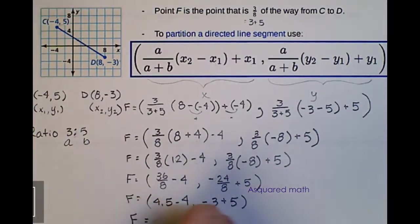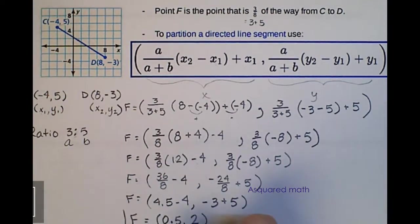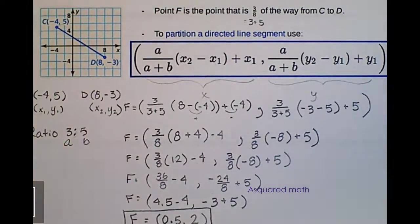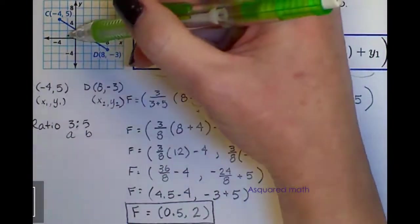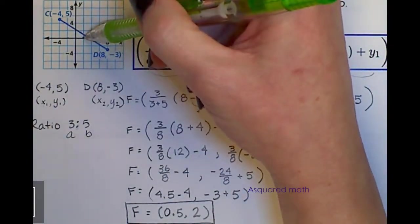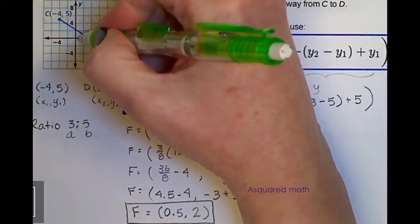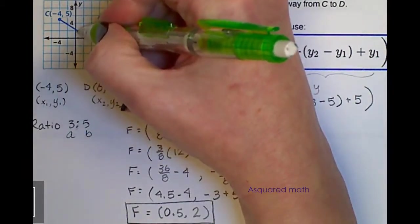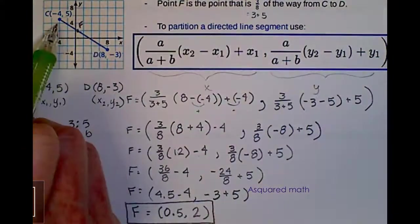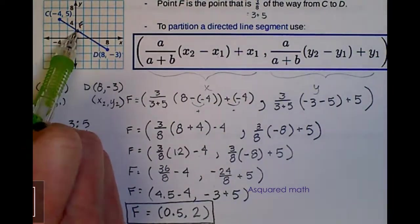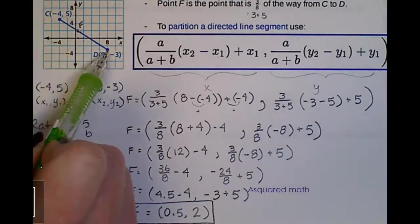Our final coordinate is 0.5 comma 2. So F is located at the coordinate 0.5, 2. So if we put that over here, each one of these is 2. So we go to the right 0.5, that's about here. And up to 2, we are right here. So this would be coordinate F. And if you look at it, that looks about right. We've got approximately 3 eighths here, and 5 eighths over here.